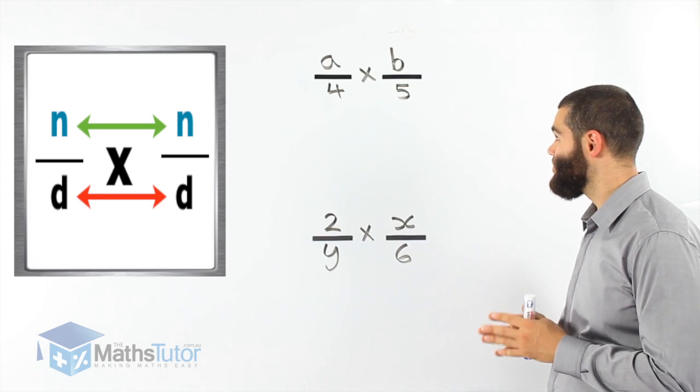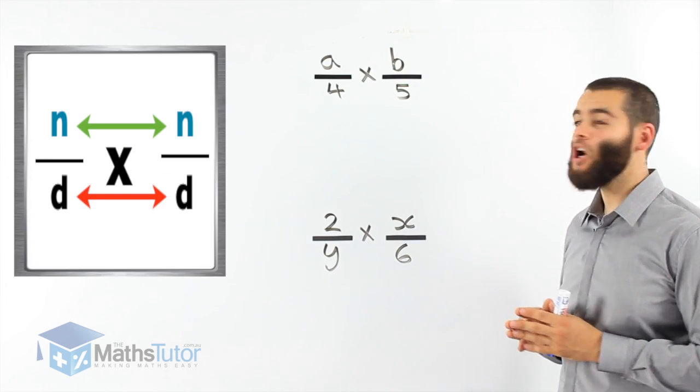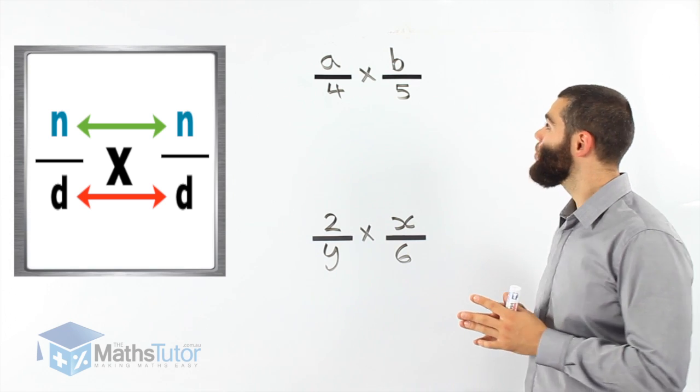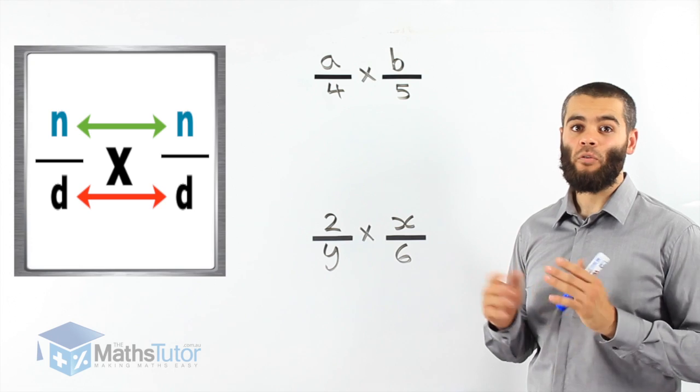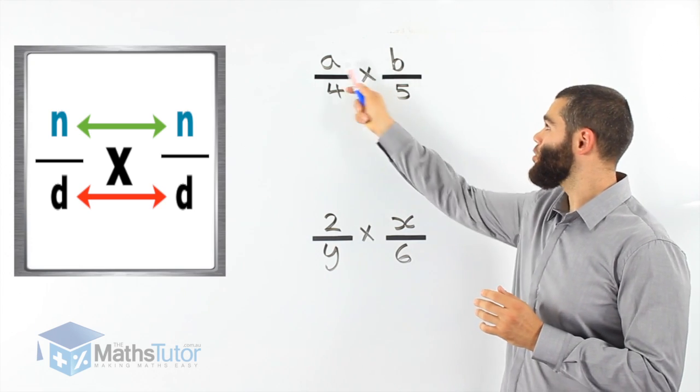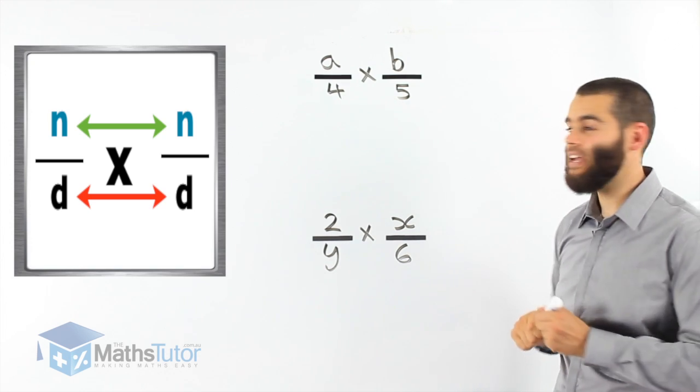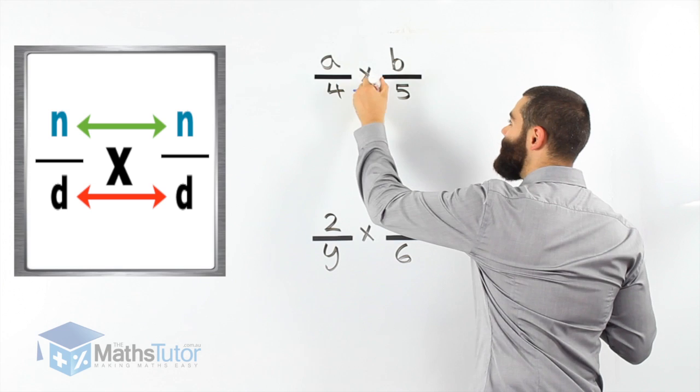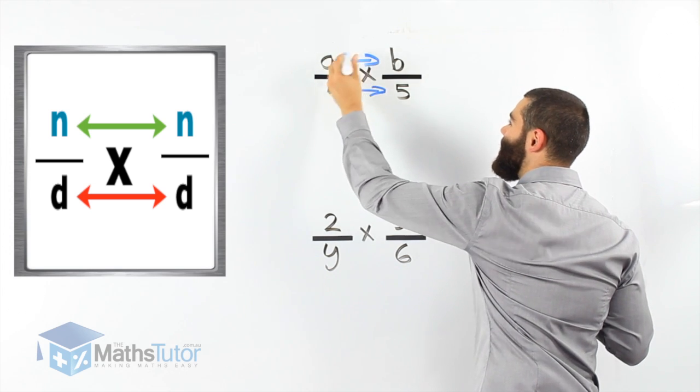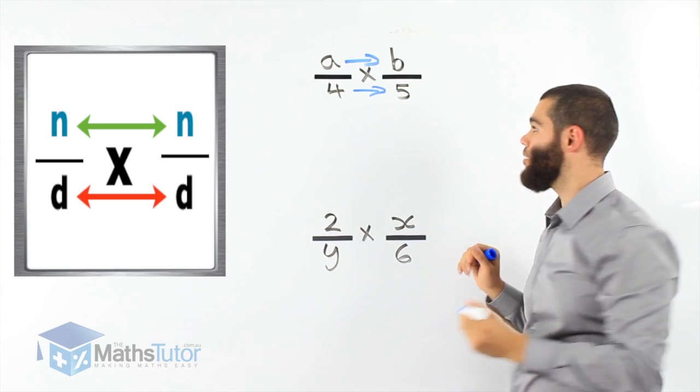Let's do some examples. We have a over 4 times b over 5. The rule is the numerators multiply together and the denominators multiply together. So it is that easy. That times that and that times that. Top times top, bottom times bottom.